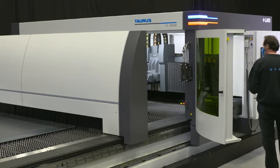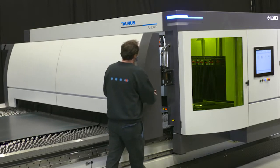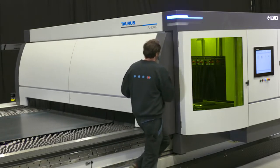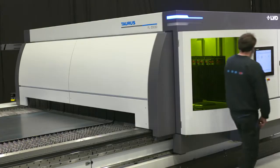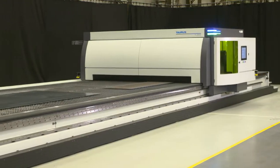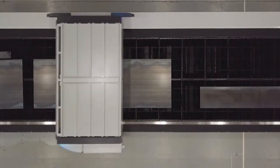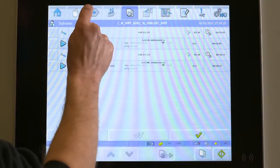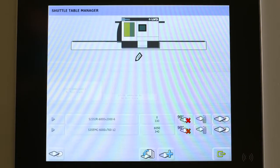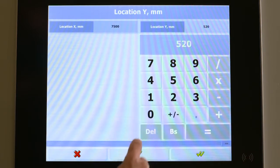On the touch control you can create a job list with the different sheets you plan to cut. You give the approximate position of the sheet and off you go.